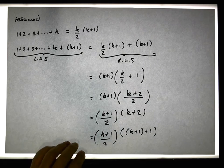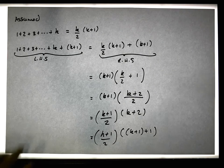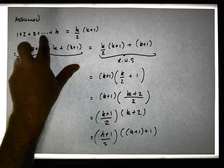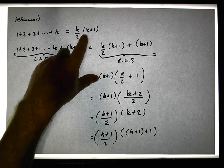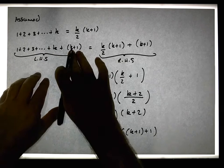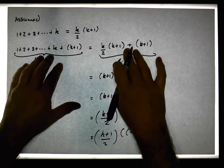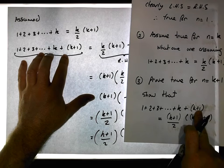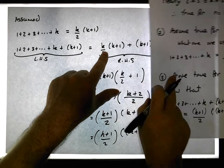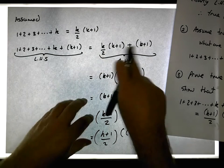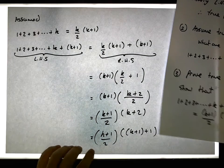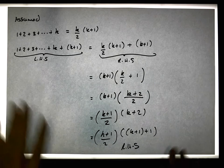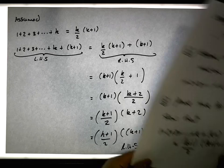k plus two is the same as k plus one plus one, so what we've actually shown is this: from our assumption in step two — that this series equals k over two times k plus one — and adding on the term k plus one to both sides, we've developed the left hand side and the right hand side into what we want to show. The left hand side is equal to the right hand side, which is exactly what we want to show in our inductive step.